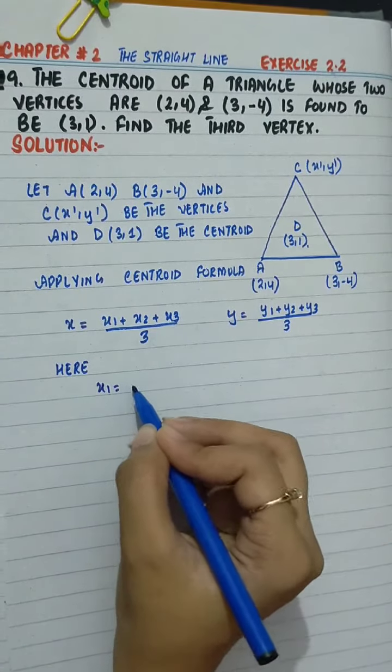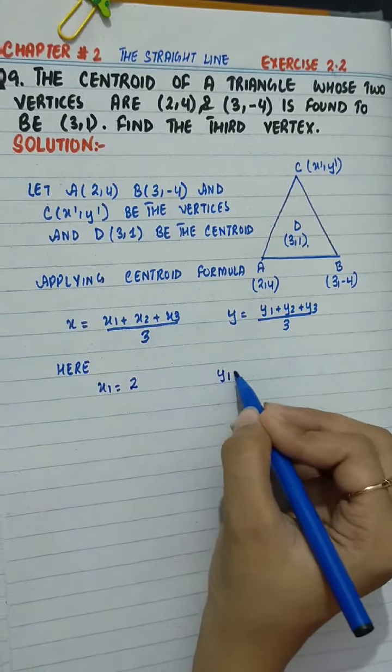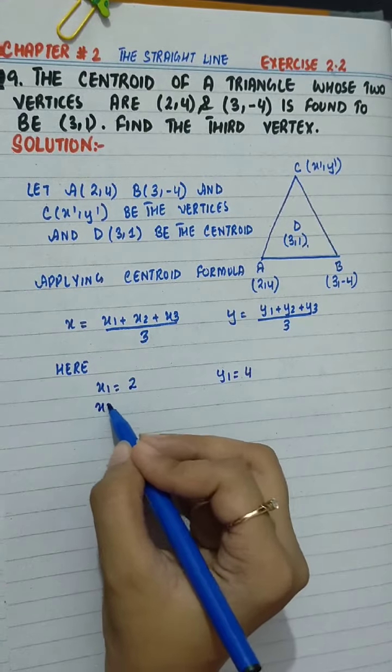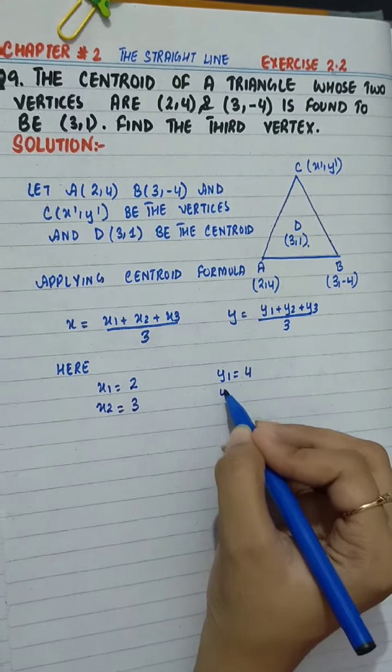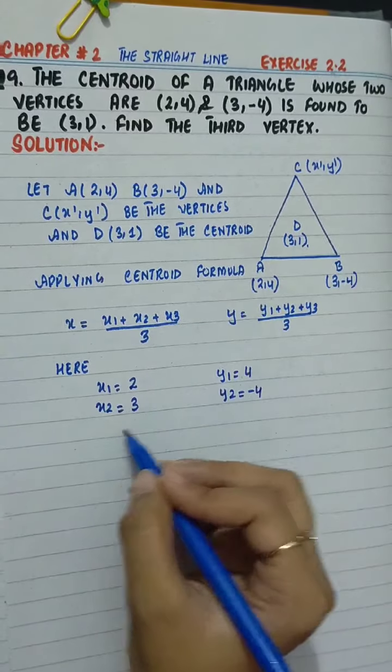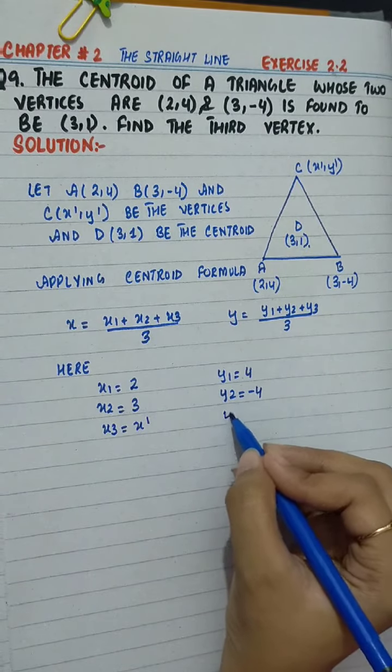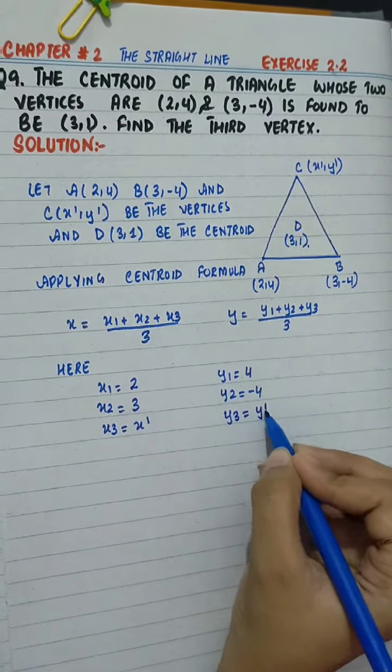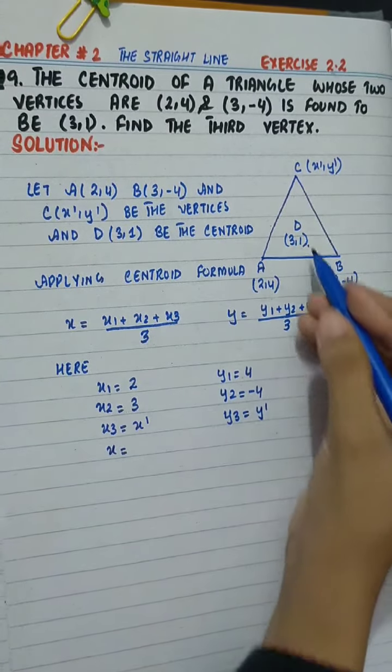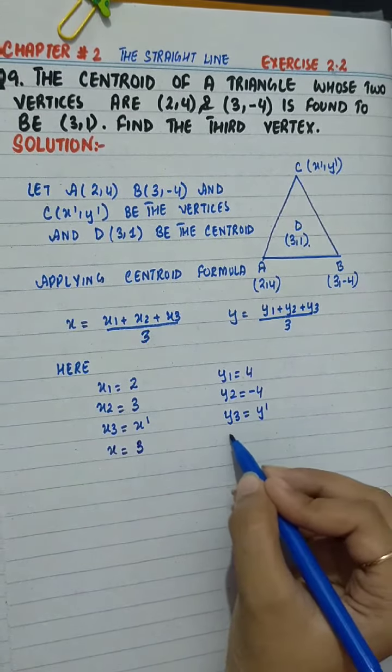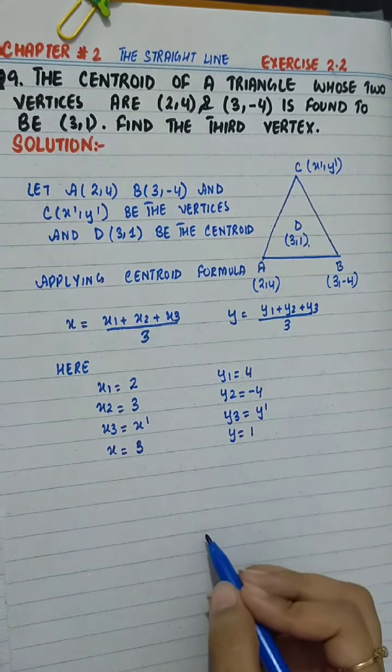Here, x₁ is 2, y₁ is 4, x₂ is 3, y₂ is -4, x₃ is x', and y₃ is y'. And the centroid given: x equals 3 and y equals 1.